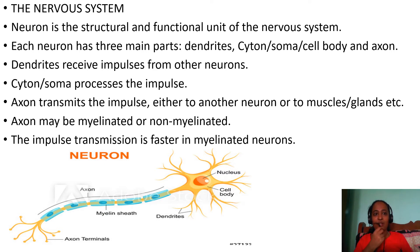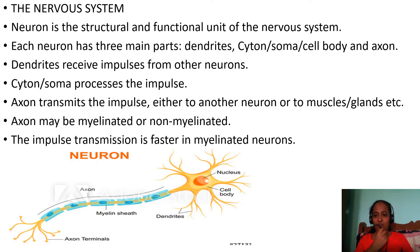The axon is an extended part of one of the dendrites. Axons may be myelinated or non-myelinated. A fatty substance that covers the axon is called the myelin sheath. The blue color covering the axon in the diagram is the myelin sheath. Impulse transmission is faster in myelinated neurons.